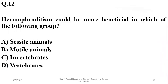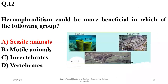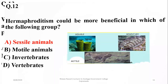Number twelve: hermaphroditism could be more beneficial in which of the following groups? Those groups which are relatively non-motile or sessile have the advantage of being hermaphrodite as compared to motile animals, so the right option is alpha.